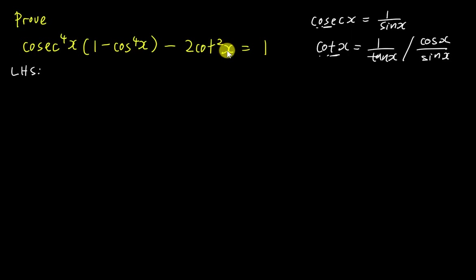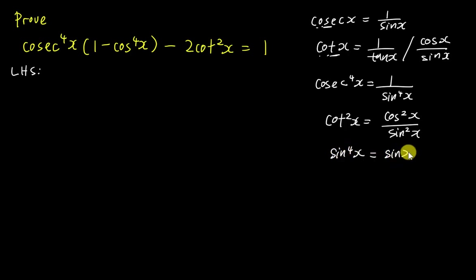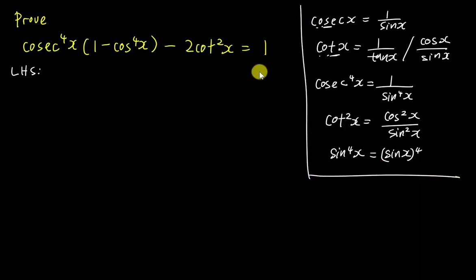Some students might worry about powers. It's the same idea: if you have cosecant to the power 4 of x, it's basically 1 over sine to the power 4 of x. And if you have cotangent squared x, that's cos squared x over sine squared x. Also note that sine power 4 of x is the same as (sine x) to the power 4 — that's just how we write it in trigonometry.